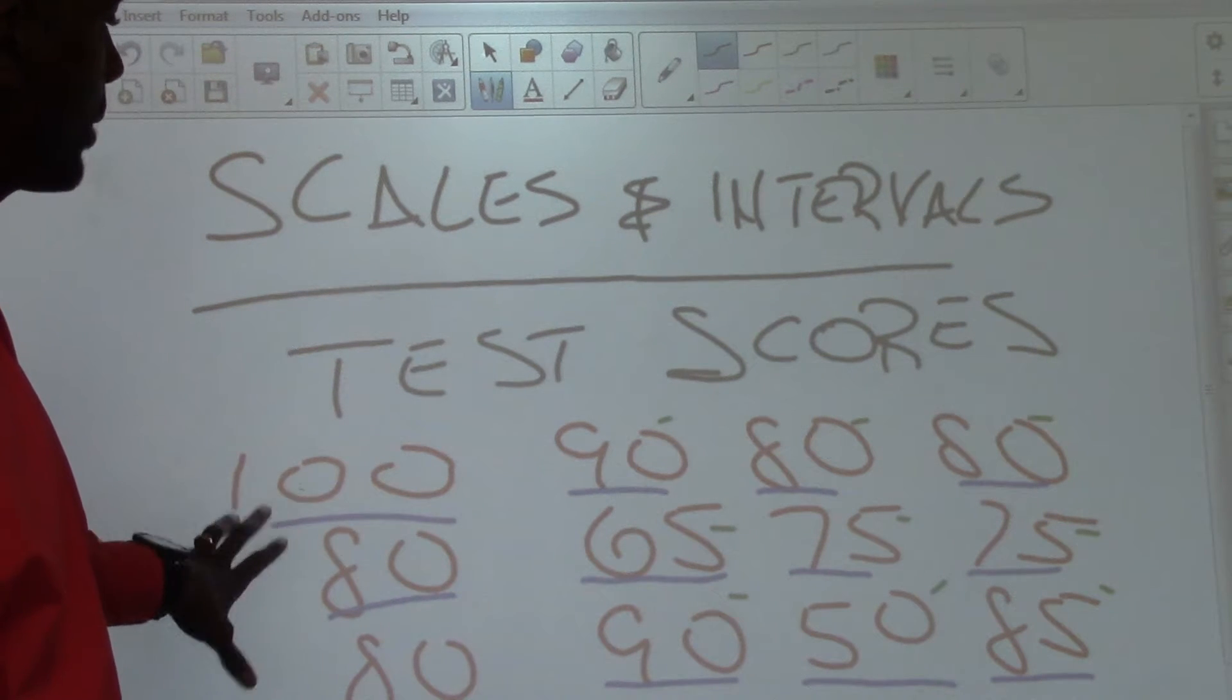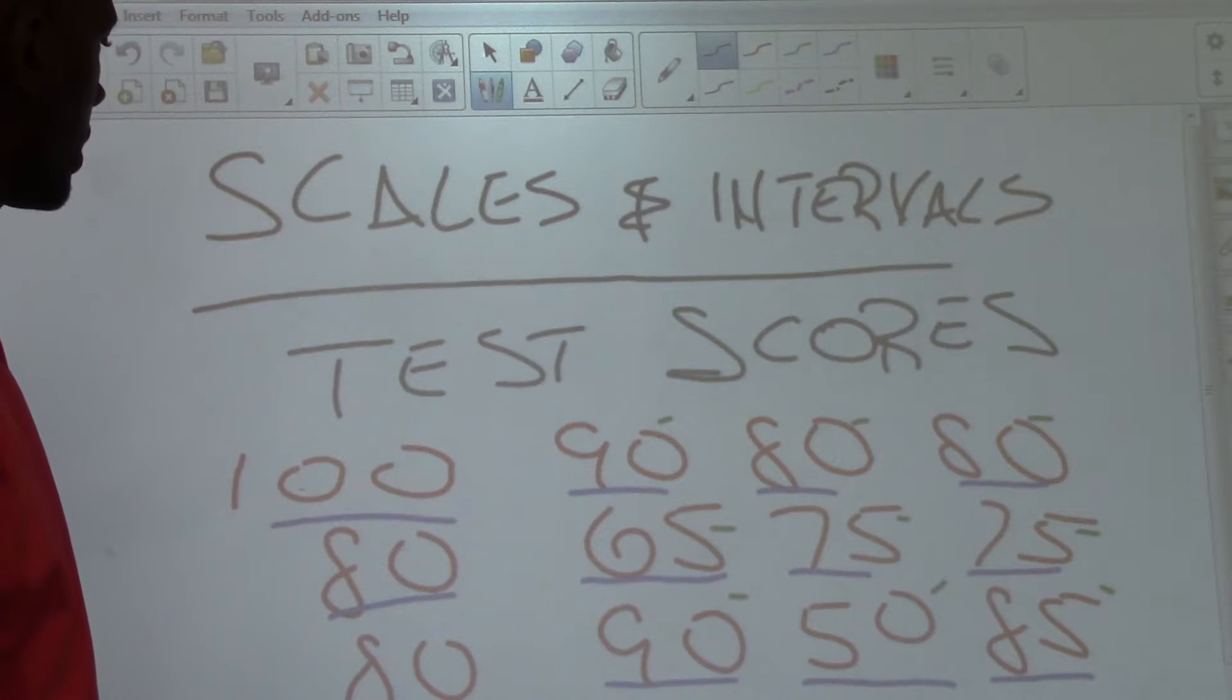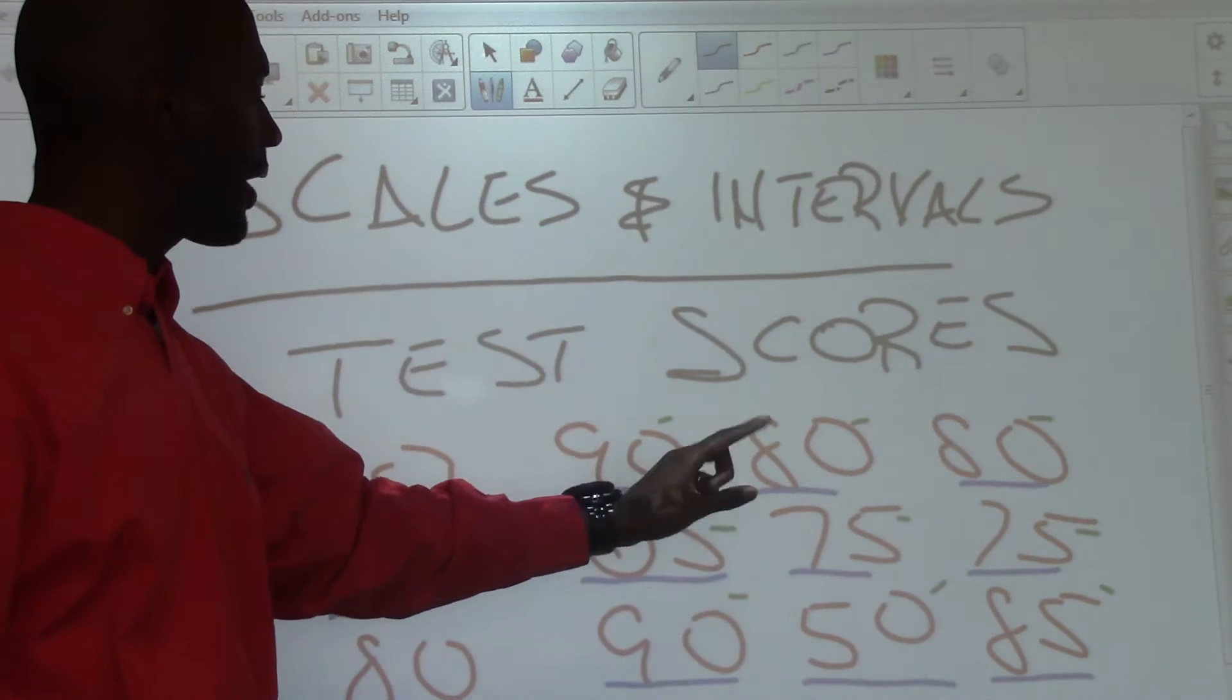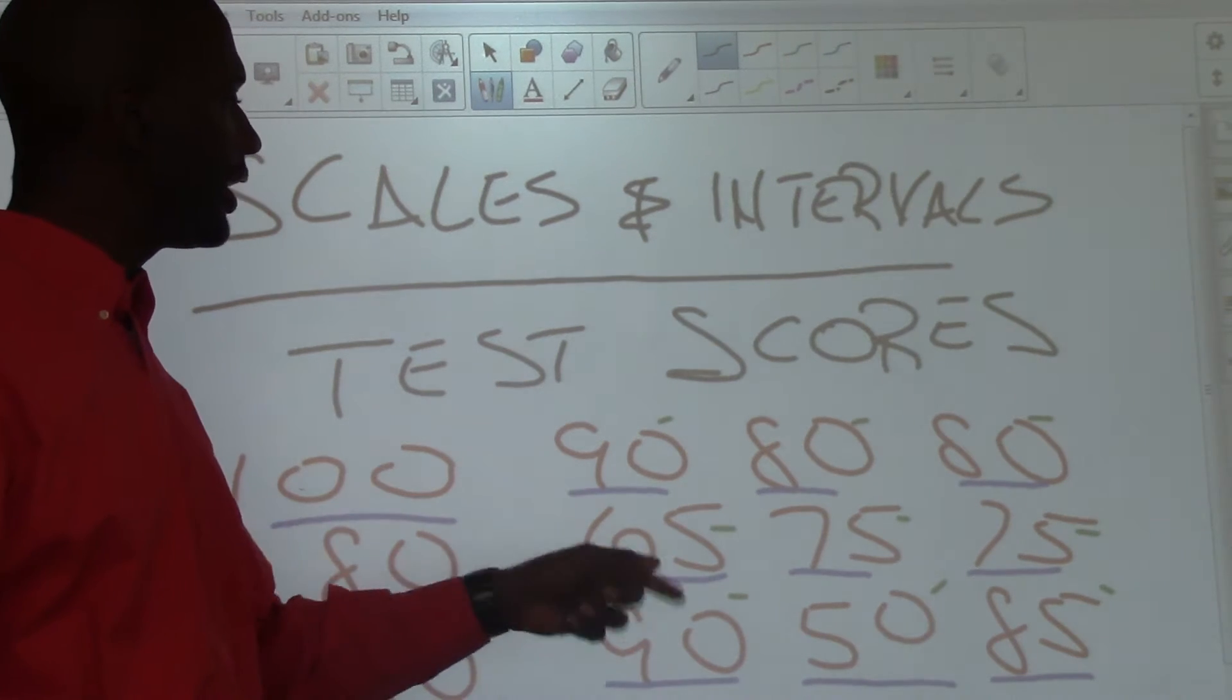The data we're going to use is going to be the same test scores that we've used before. The test scores of 100, 90, 80, 80, 80, 65, 75, 75, 80, 90, 50, and 85.